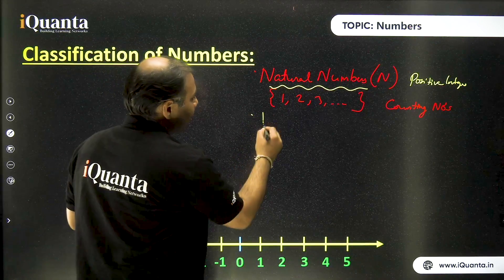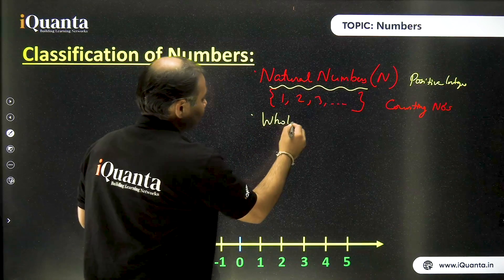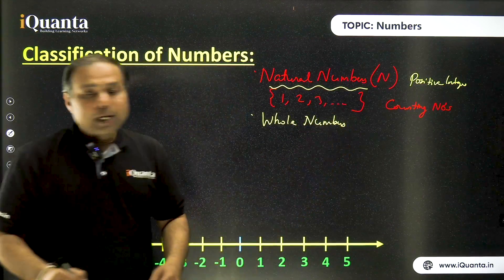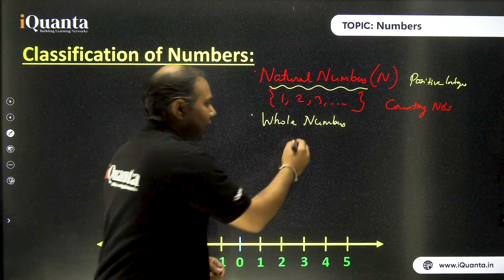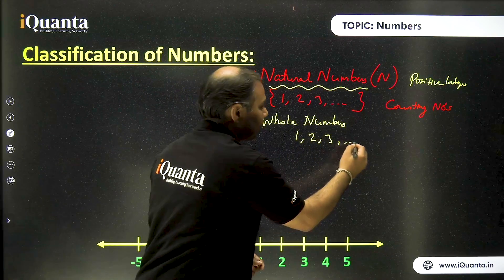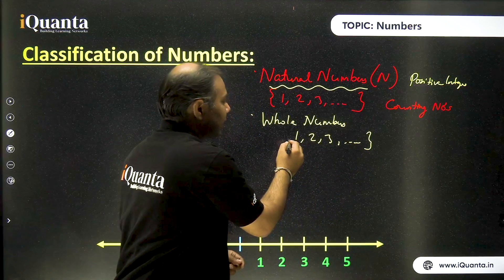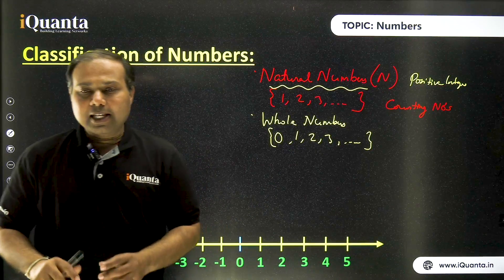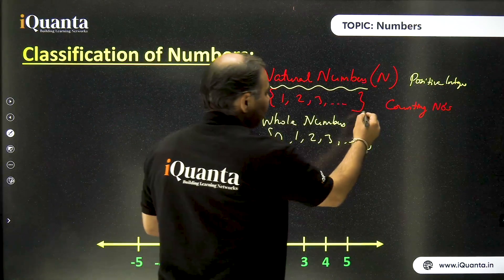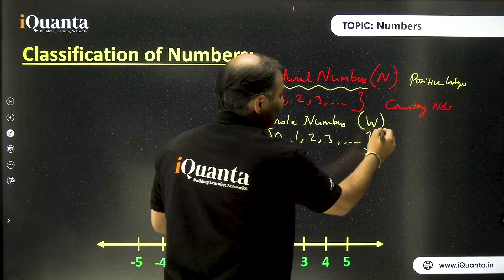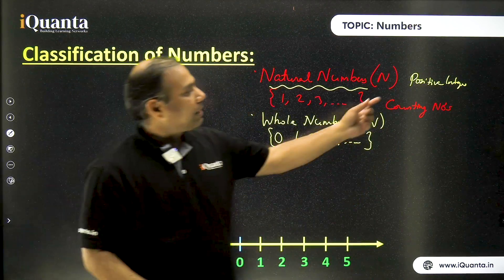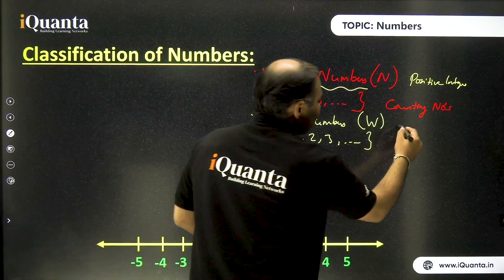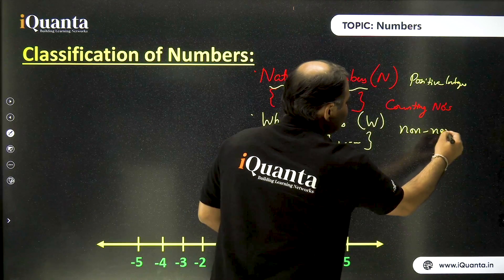It is whole numbers. Now whole numbers includes all these natural numbers starting from one, two, three and so on. But other than that, there is a special number that is zero. So that is also included in this set of whole numbers. The symbol for that is capital letter W. And as we said natural numbers to be positive integers, these whole numbers are also known as non-negative integers.